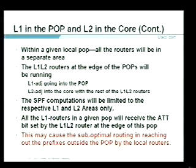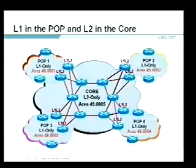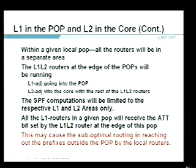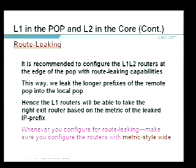Within a POP, all routers are in a separate area. L1/L2 routers at the edge have L1 adjacency into the POP and L2 adjacency into the L2 domain. The ATT (attachment) bit concept: if I'm an L1/L2 router connected to a different area, I set the ATT bit in the L1 database. All L1 routers in a POP receive the ATT bit from the edge L1/L2 routers. With route leaking, individual prefixes with associated metrics are provided, avoiding suboptimal routing. Recommendation: always use metric style wide when doing route leaking.